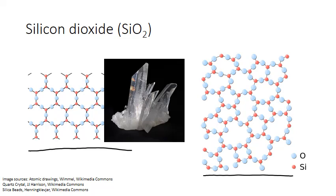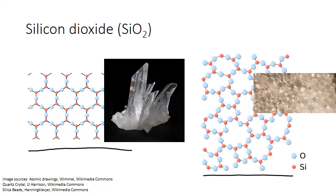The amorphous form though does not form crystals. Instead we have glass and irregular solid shapes like these silica beads.